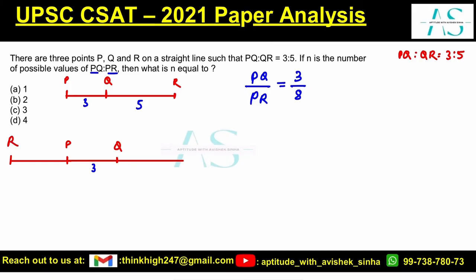And from here to here, QR is simply five parts. So if we talk about R to P, it is just two more parts. Now, PQ/PR - PQ is three, but PR, this distance, is two.